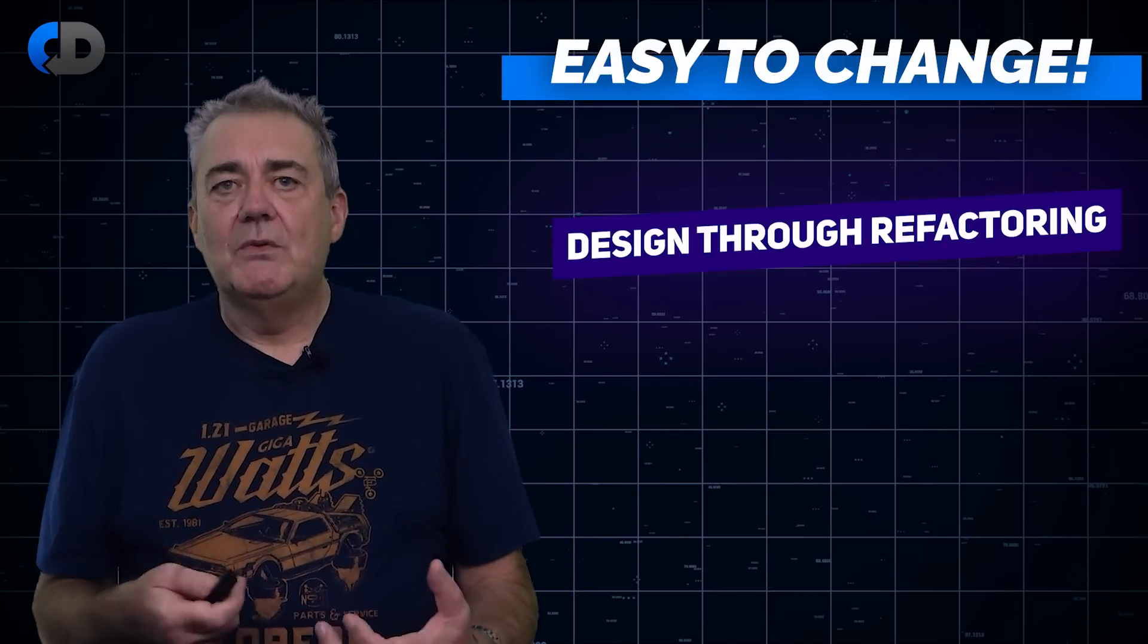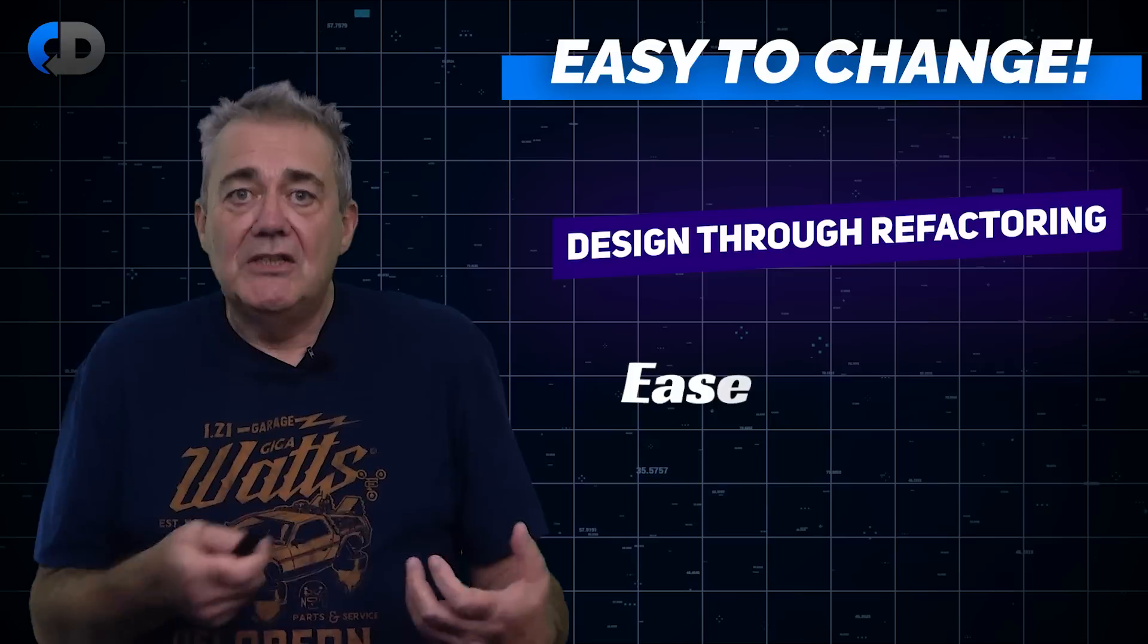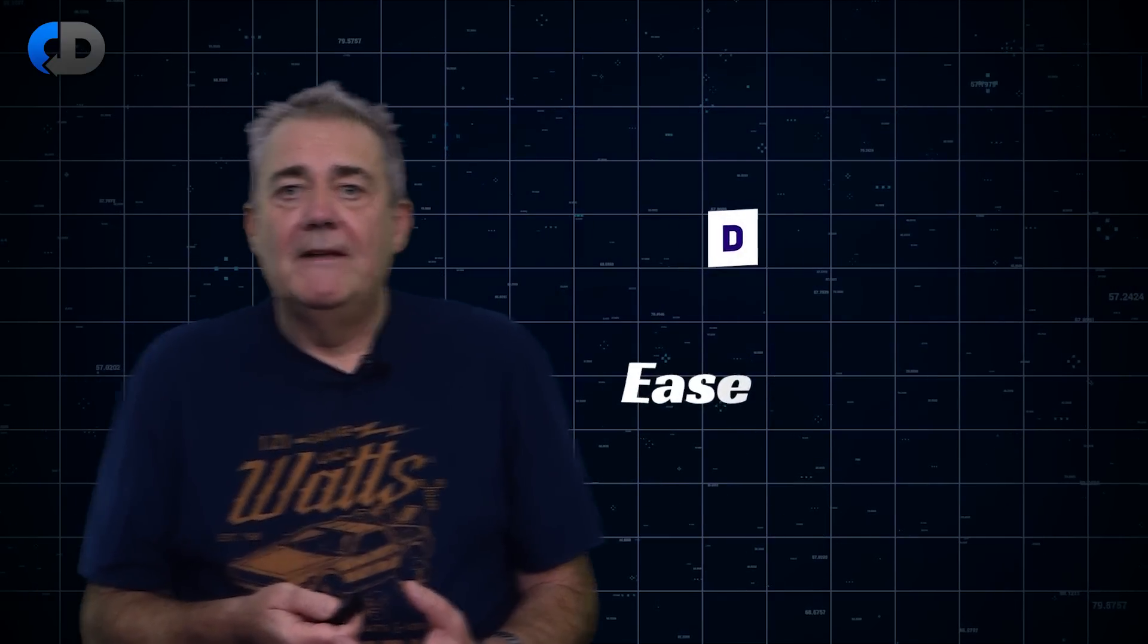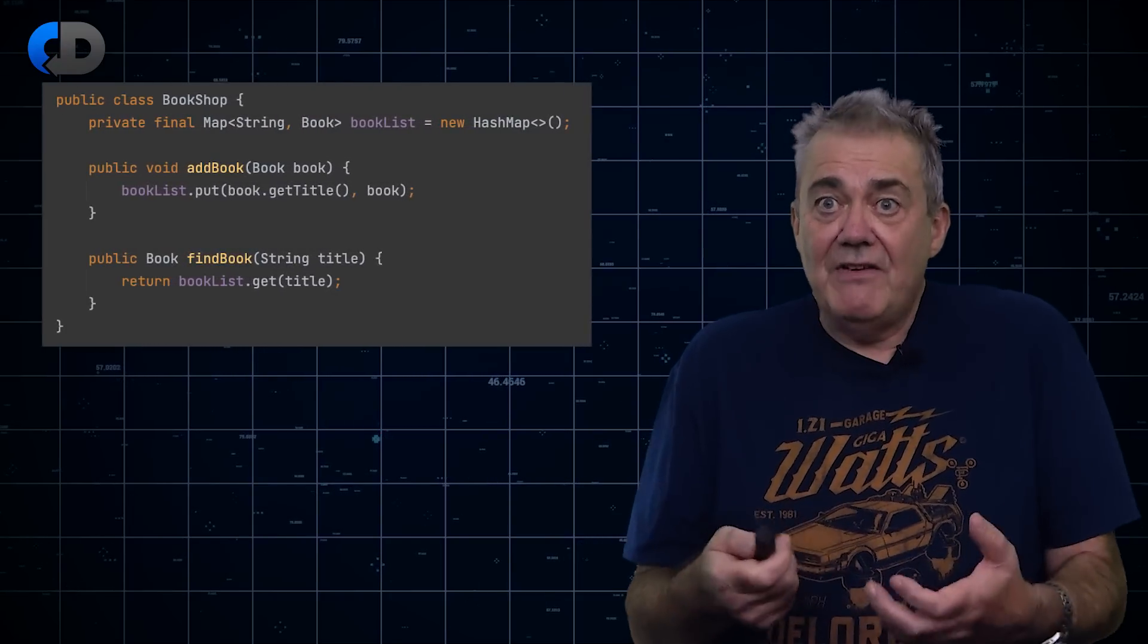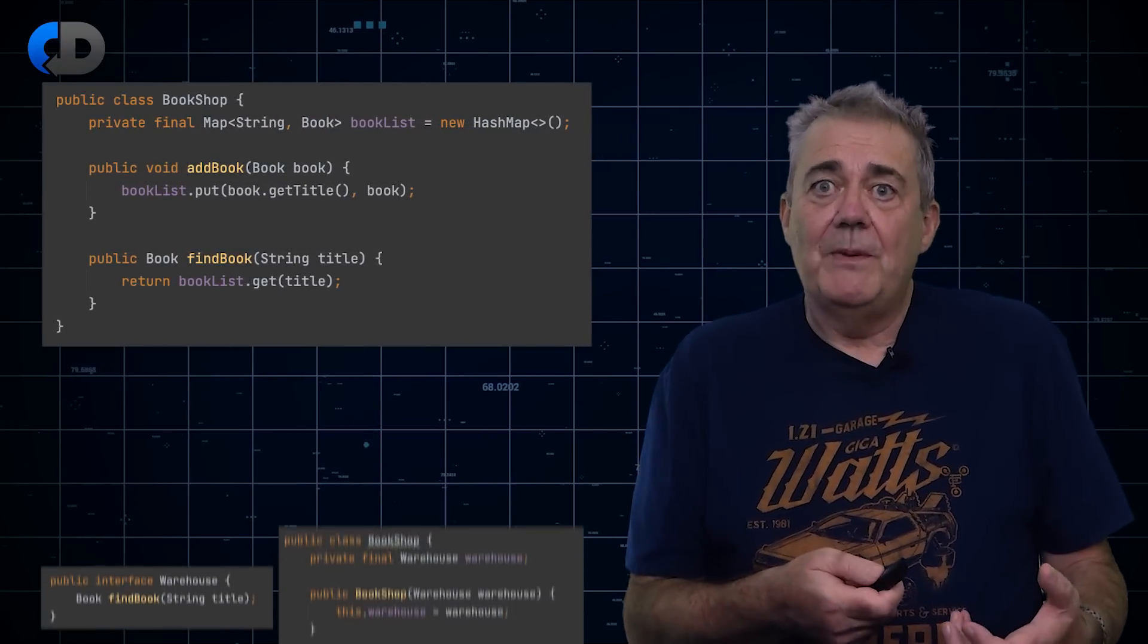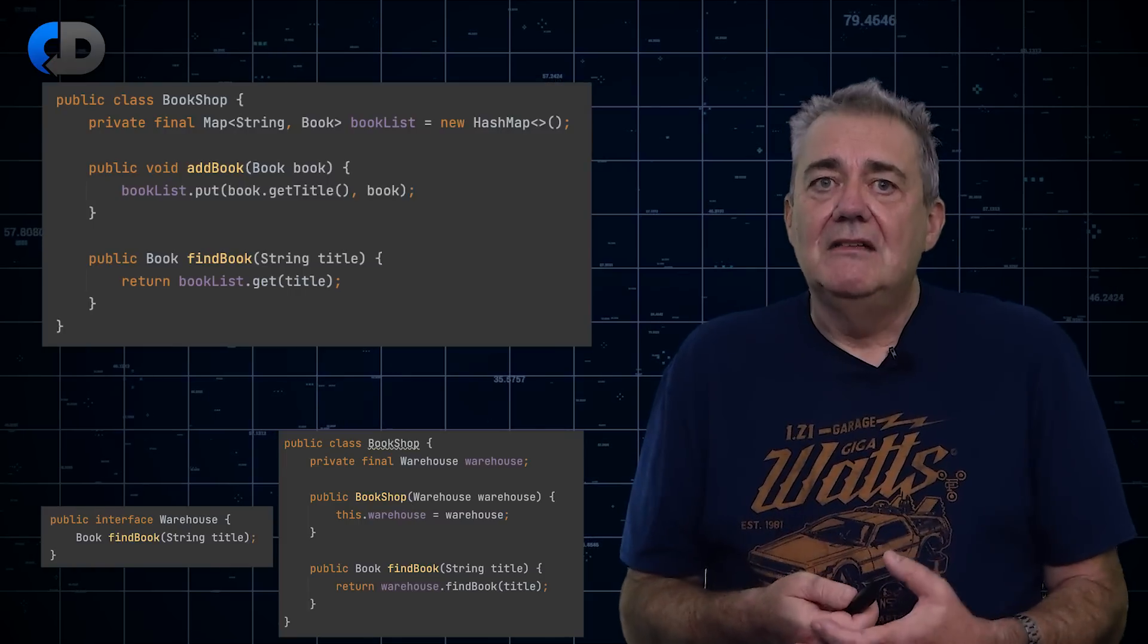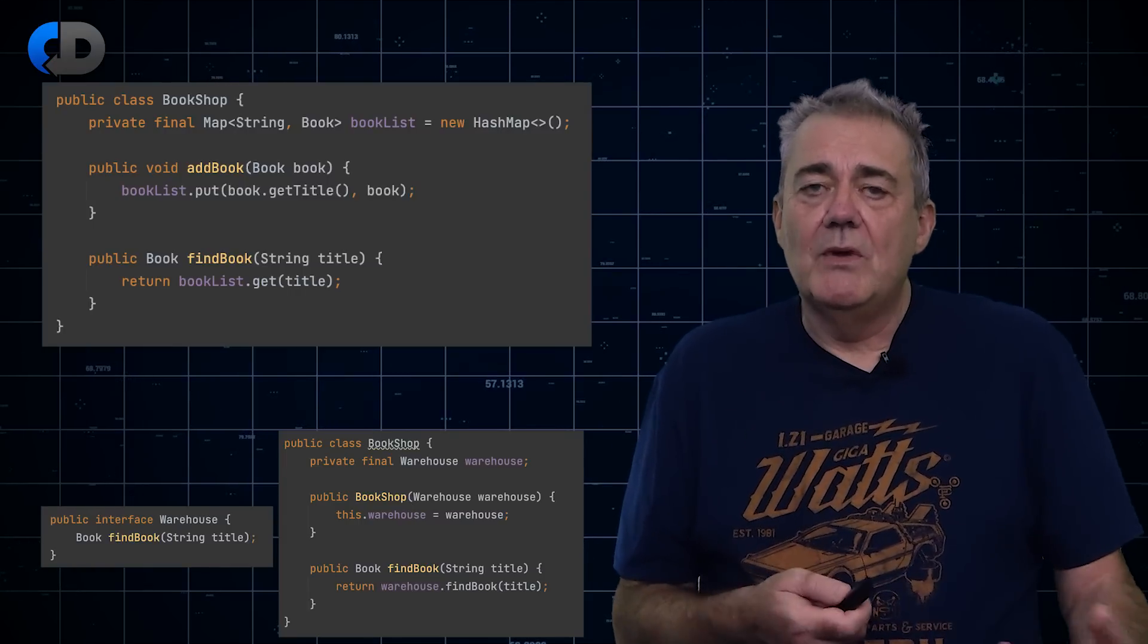The ease with which we can revisit our code and change it safely and with confidence is a marker of its quality. If we're scared to change it, then the design's poor. If we can change it, maybe even radically, without fear, the design's good. So even though, for my bookshop example, my first rough sketch is this, and even though this second step is a bit more code, I still say that where I end up is better than where I started.